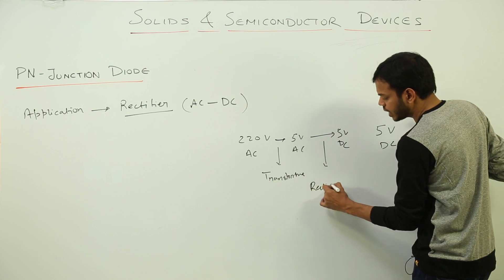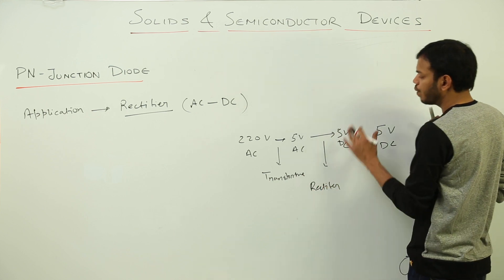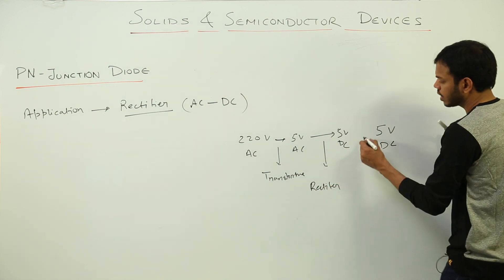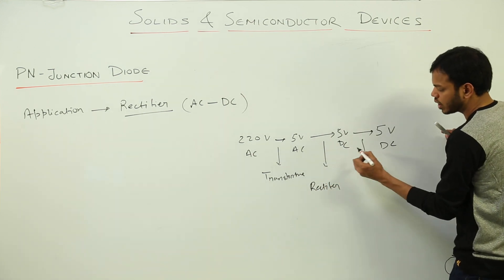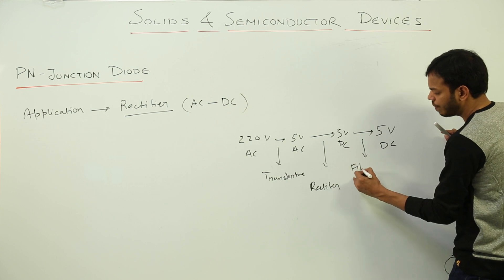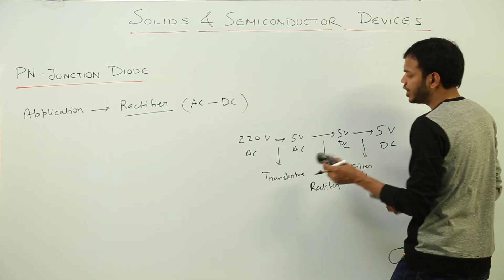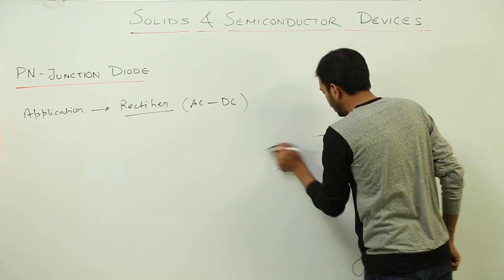But this voltage is kind of fluctuating in nature. So this fluctuating is converted into constant DC or stable DC, which is done by a filter circuit. So these three basic components are always there in any charger. Now,